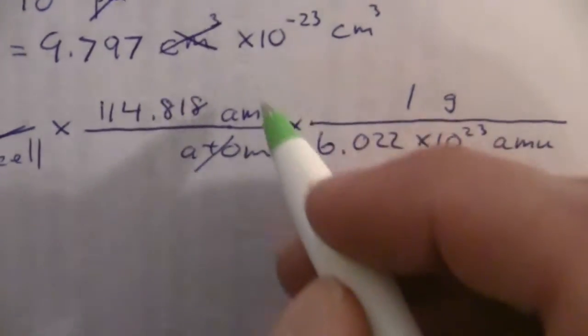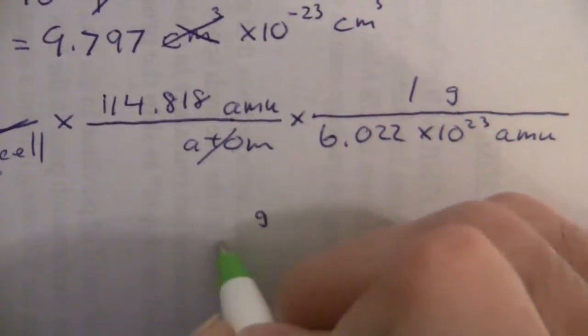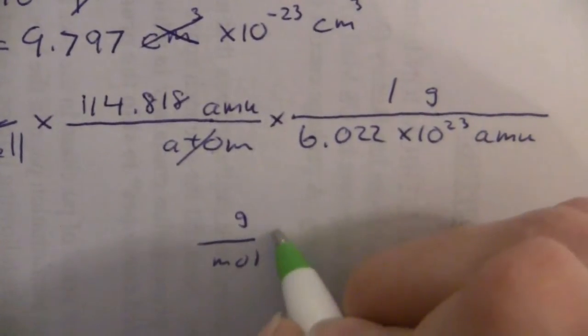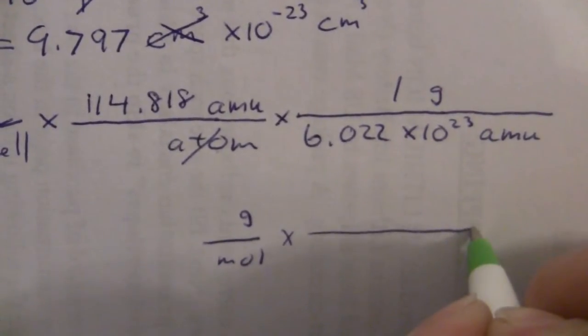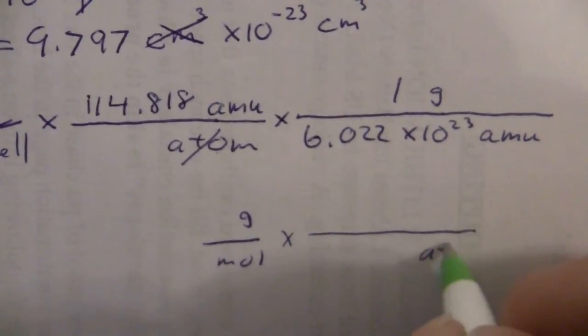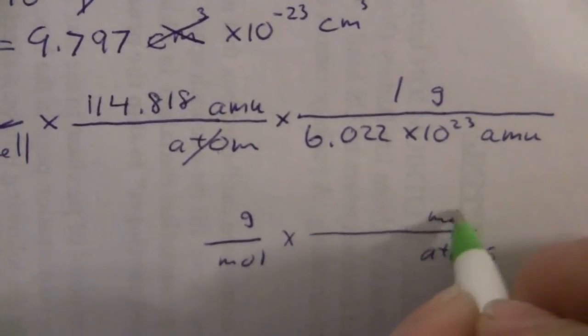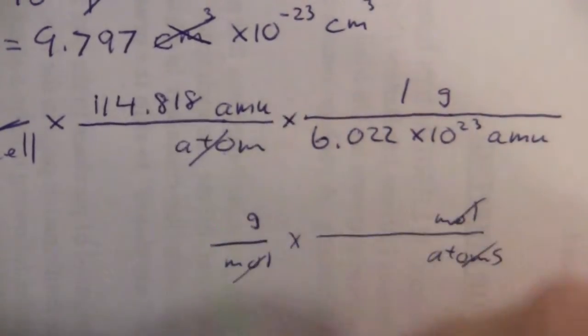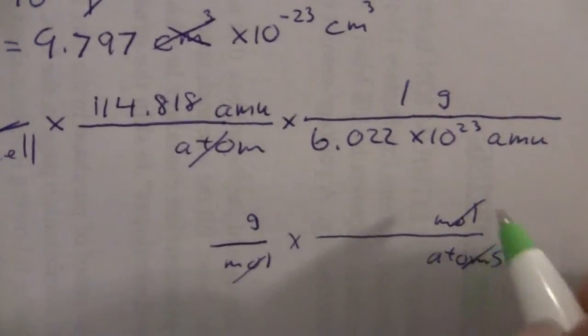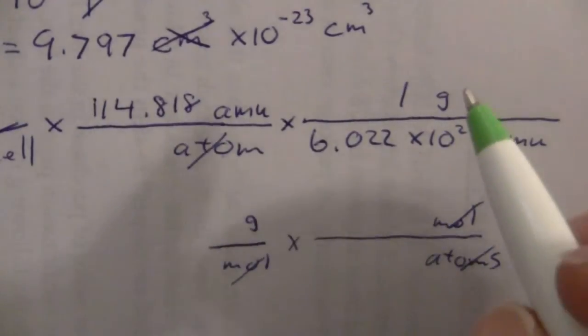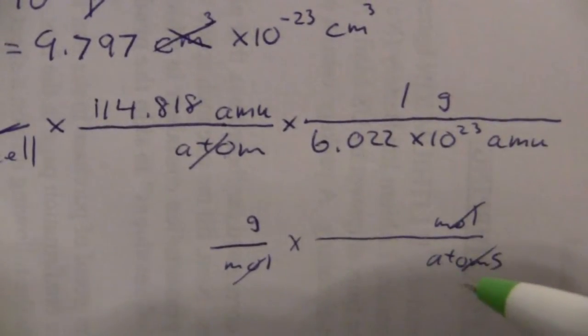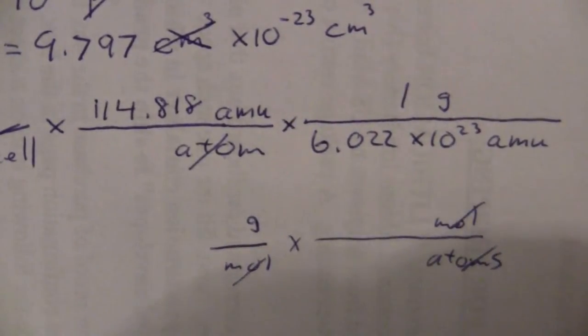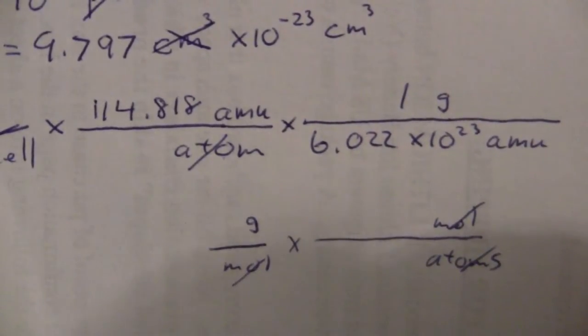We could also use here grams per mole, and then this will be still Avogadro's number, but it's going to be atoms per mole, and the moles will cancel, the atoms will cancel there, of course, if we arrange it the right way. And either way, the math will work out to be just the same.